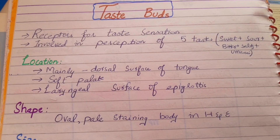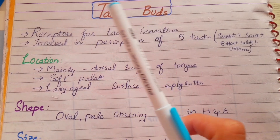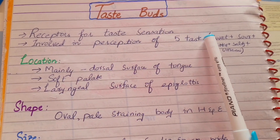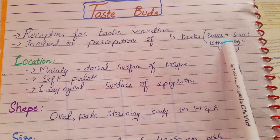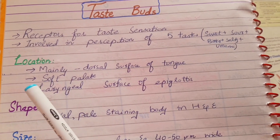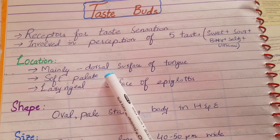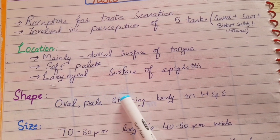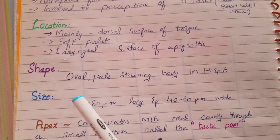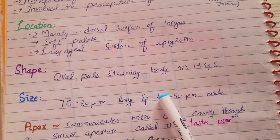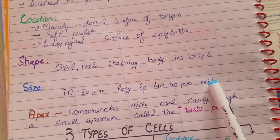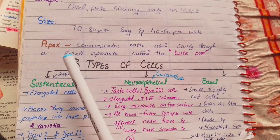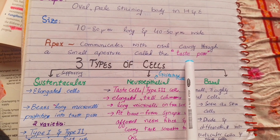Taste buds are receptors for taste sensation and are involved in the perception of five tastes: sweet, sour, salty, bitter, and umami. Their location is mainly on the dorsal surface of the tongue, on the soft palate, and on the laryngeal surface of the epiglottis. Their shape is oval, and they appear pale-staining in H&E. Their size is about 70 to 80 micrometres long and 40 to 50 micrometres wide. The apex of the taste bud communicates with the oral cavity through a small aperture called the taste pore.